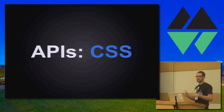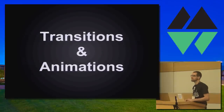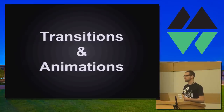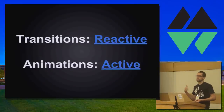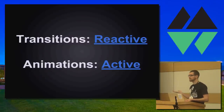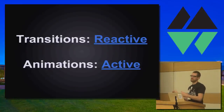So that's methodology — let's look at how we can use code to make this real. CSS gives us two APIs for making things move on the web: transitions and animations. I see transitions as a reactive approach to animating things, and animations as active. Transitions respond to a change in state in the DOM, while animations create that change in state.